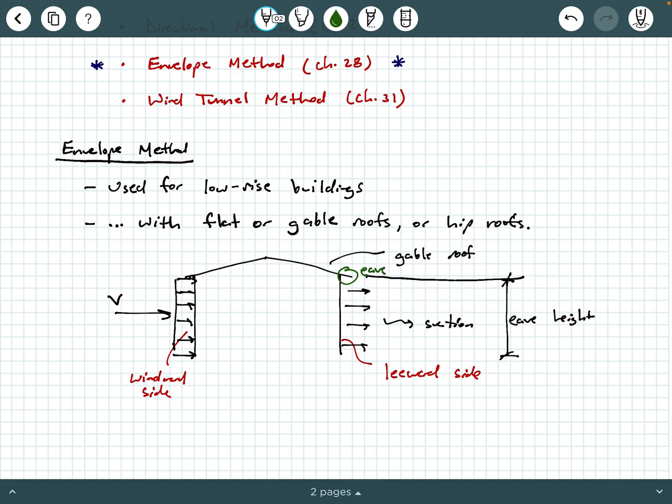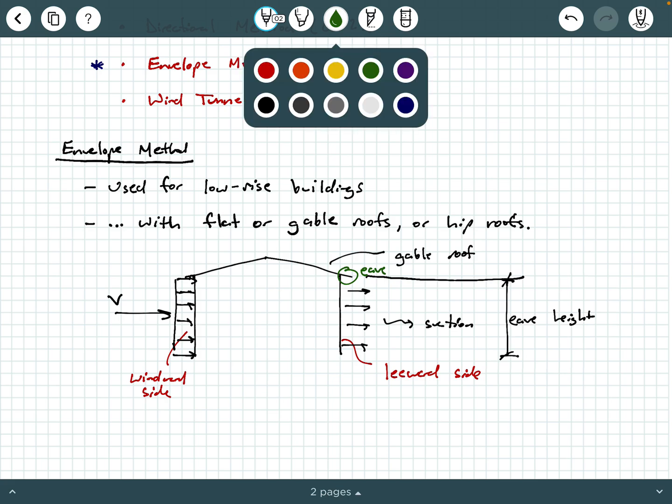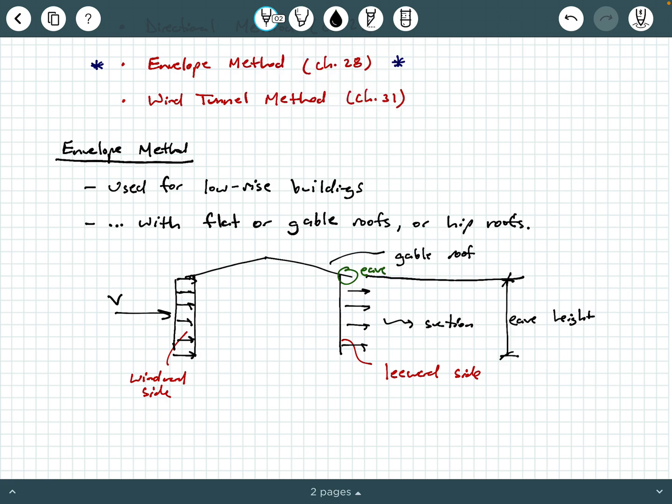We also have what would be called the mean roof height. The mean roof height is pretty much what it sounds like. It's the height of your structure from its ground surface up to basically the average roof height. It's the height that's in between the eave height and the crest height. We typically call that H, mean roof height.